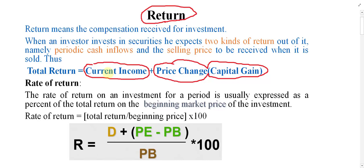For example, Ahmad has invested in a company and he expects some kind of dividend or income at the end of each year. The income received regularly from the business at the end of each year or during the year is called current income. Ahmad may also expect another sort of income called price change or capital gain — that when he wants to sell the share in the market, he should be able to sell it for more than what he purchased.